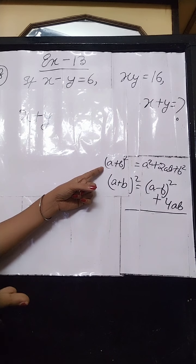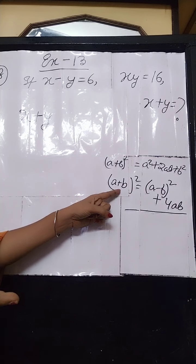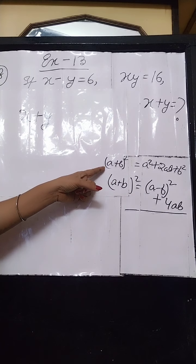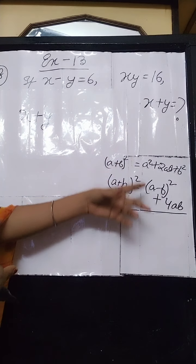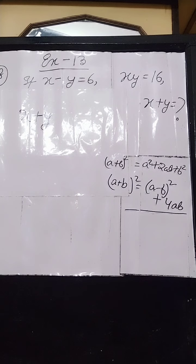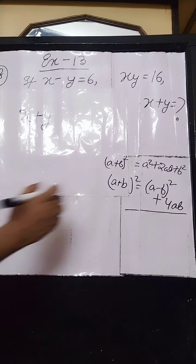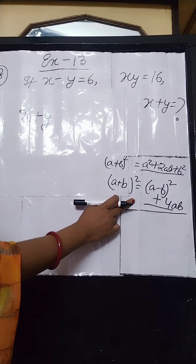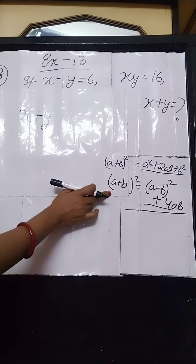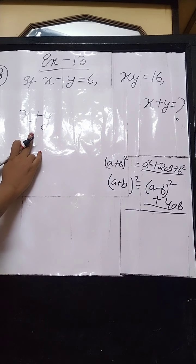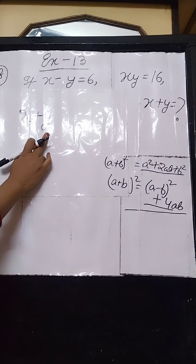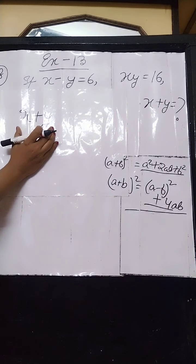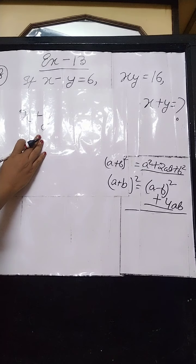The formula can also be written in a different form: (A+B)² = (A-B)² + 4AB. This is the second form of the previous formula. In this sum we will apply the second form because we have to find the value of x plus y. Here x plus y is not given — instead x minus y is given. You have to consider x as A and y as B, and find the value of x plus y.